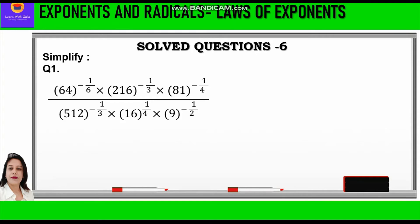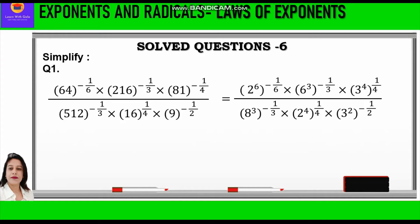Over here, if you observe, in the bracket we have the bases as 64, 216, 81, and so on. We will convert these bases into exponential form such that they match with the power given outside. Outside it is 1 by 6, 1 by 3, 1 by 4, and so on.